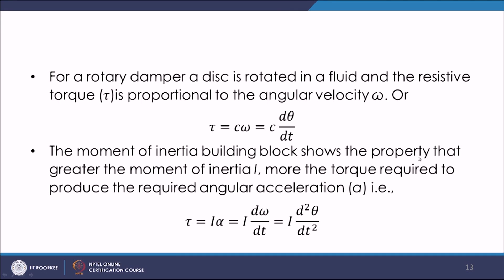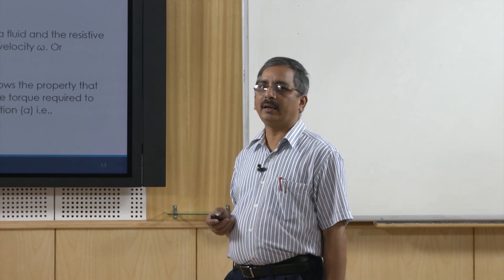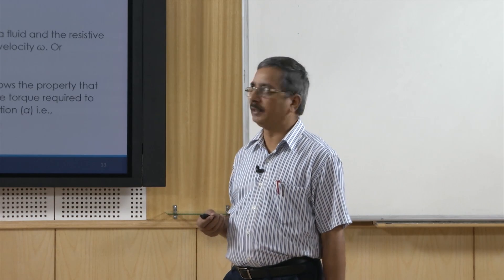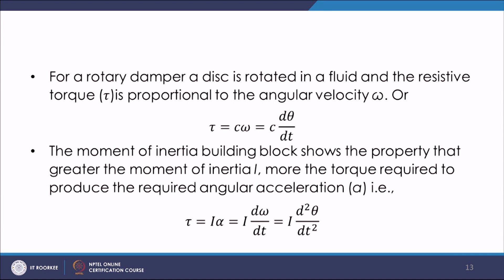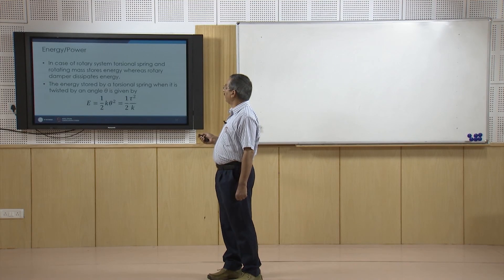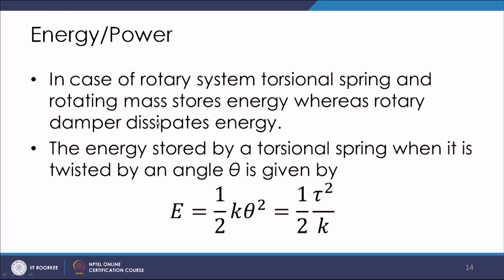For the rotary damper, a disc rotates in a fluid and the resistive torque is proportional to angular velocity: τ = Cω = C(dθ/dt). For the moment of inertia building block, greater moment of inertia requires more torque to produce a given acceleration: τ = Iα = I(d²θ/dt²). In the rotational system, the torsional spring and rotating mass store energy while the rotary damper dissipates energy.